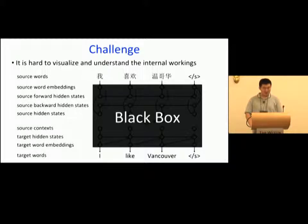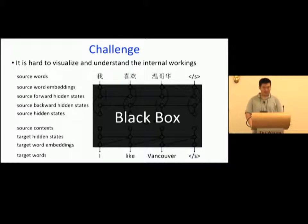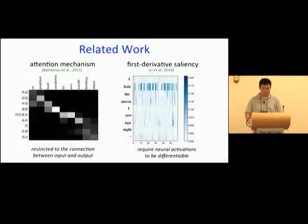It is hard to visualize and understand the inner workings of neural networks. All internal information is represented as real-valued vectors or matrices. It is difficult to associate hidden states in neural networks with interpretable language structures. As a result, the lack of interpretability leads to difficulty in understanding the translation process and debugging MT systems. In fact, this is also a challenge for other deep learning-based NLP tasks. Therefore, visualizing and understanding neural networks is an important direction.